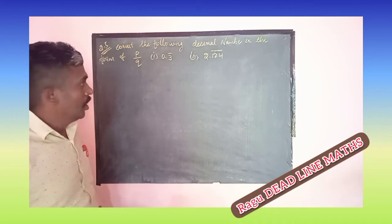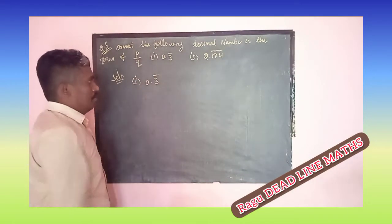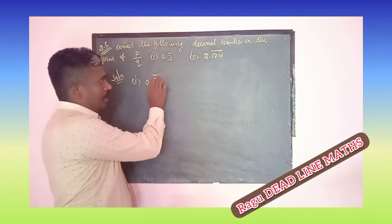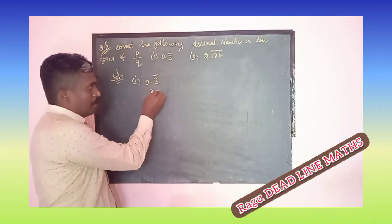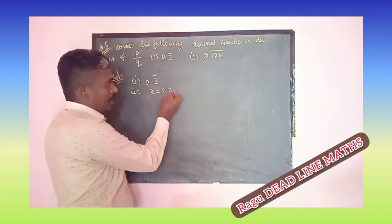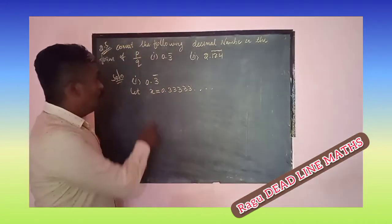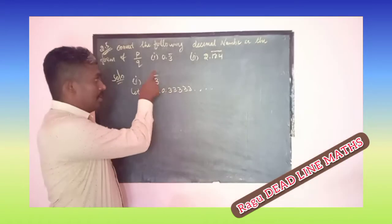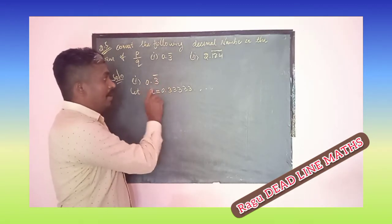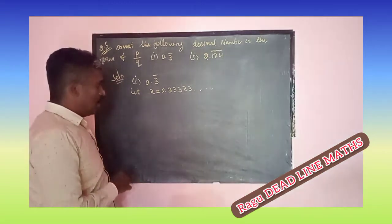We want to convert it. See the first question — they have given the number 0.3 bar, written like this. 0.3 bar means the digit 3 is repeated: x is equal to 0.33333... and so on, it is not finished. The bar means the number is repeating and it keeps going on.